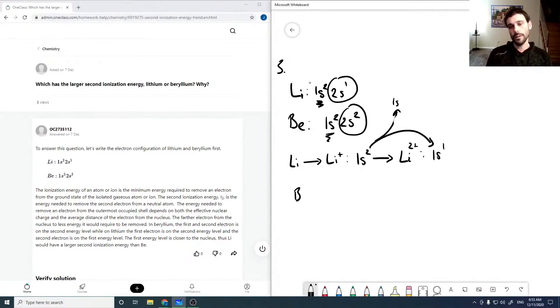So for beryllium, we're going to go to beryllium plus, which is 1s2, 2s1. And then we're going to go to beryllium 2 plus, which is just 1s2. So in this case, we're removing a 2s electron.